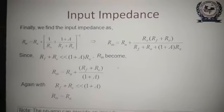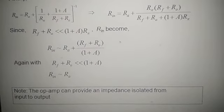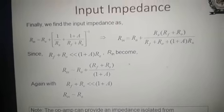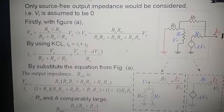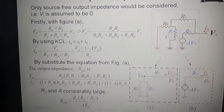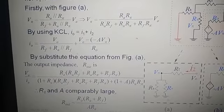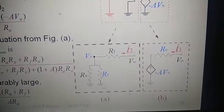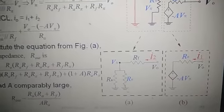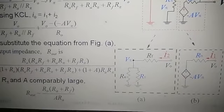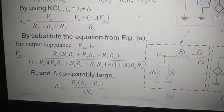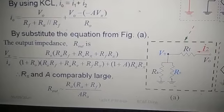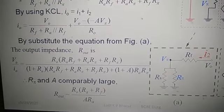Note that the op-amp can provide impedance isolation from input to output. For the output impedance, you calculate output voltage upon output current (Vo/Io) from the equivalent diagram. The output resistance is: Rout = Ro × (Ra + Rf) / (A × Ra), where Ro is the output resistance of the op-amp.